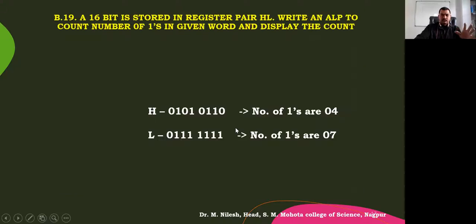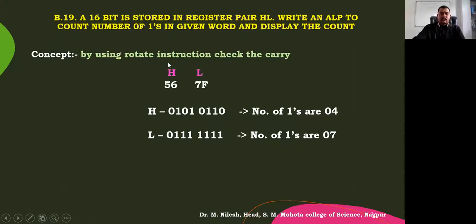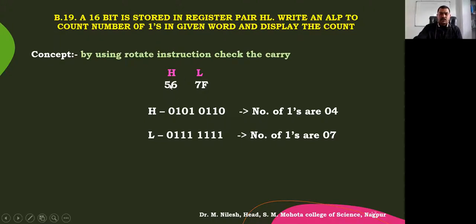We are going to use that instruction. Now let us start the program. The concept we are going to use is: by using the rotate instruction, we need to check the carry. So let us start the program. We have taken the two numbers H and L in register pair HL, where we are supposed to store this 16-bit number — in H we store 56H, in L we store 7FH.